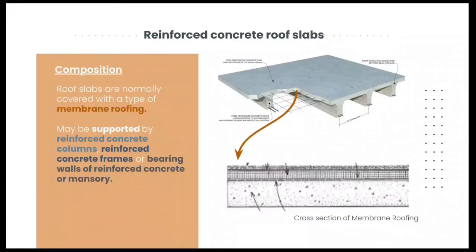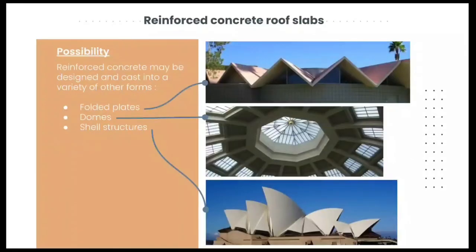Roof slabs are normally covered with a type of membrane roofing. It may be supported by reinforced concrete columns, reinforced concrete frames, or bearing walls of reinforced concrete or masonry. Reinforced concrete may be designed and cast into a variety of other forms, which are folded plates, domes, and also shell structures.